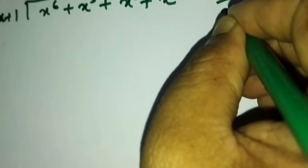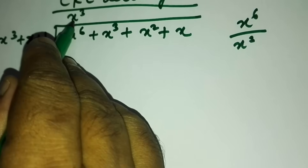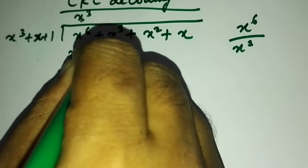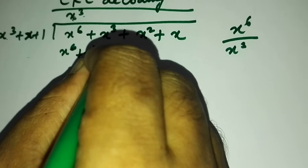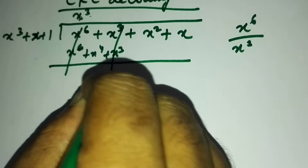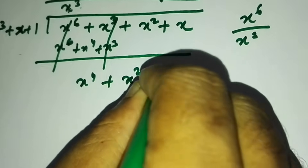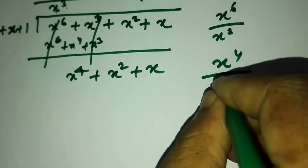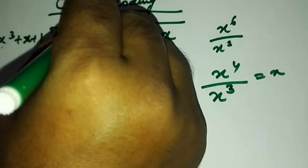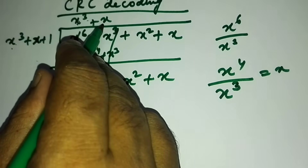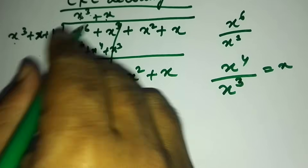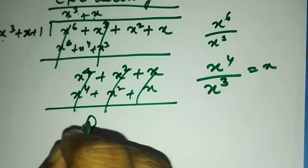When you divide x⁶ by x³ you get x³. Multiplying: x³ · (x³ + x + 1) = x⁶ + x⁴ + x³. These cancel, leaving x⁴ + x² + x. Then x⁴ divided by x³ gives x. Multiplying: x · (x³ + x + 1) = x⁴ + x² + x. These cancel, so your remainder is 0.